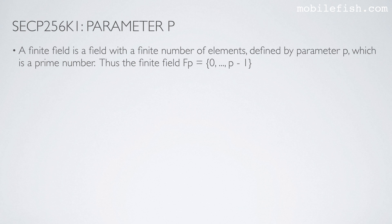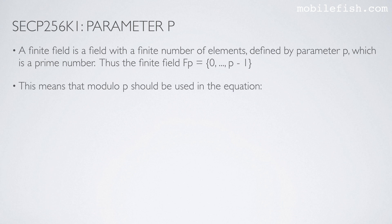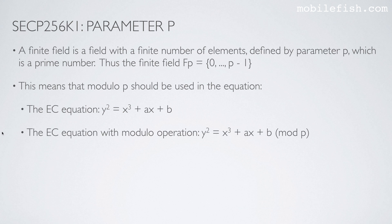A finite field is a field with a finite number of elements defined by parameter P, which is a prime number. Thus the finite field range lies between 0 and P minus 1. This means that modulo P should be used in the equation. The elliptic curve equation is Y squared equals X cubed plus AX plus B, and with the modulo operation it becomes Y squared equals X cubed plus AX plus B modulo P.